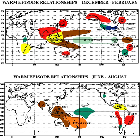Recent Central Pacific El Niños happened in 1986–87, 1991–92, 1994–95, 2002–03, 2004–05, and 2009–10. Furthermore, there were Modoki events in 1957–59, 1963–64, 1965–66, 1968–70, 1977–78, and 1979–80. Some sources say that the El Niños of 2006–07 and 2014–16 were also Central Pacific El Niños.